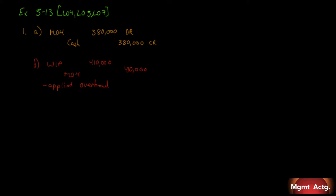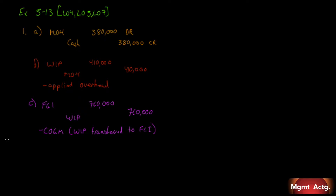Entry C has a credit entry in work in process — $760,000 is leaving. Over in finished goods, $760,000 is entering. So finished goods goes up by $760,000 and work in process drops by $760,000. That's cost of goods manufactured — work in process transferred to finished goods inventory. Our cost of goods manufactured is $760,000.